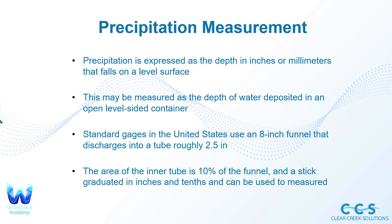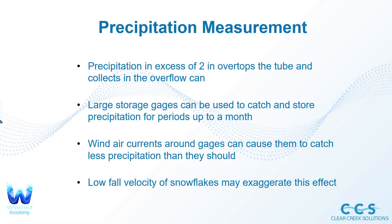Precipitation is expressed as the depth in inches or millimeters that falls on a level surface. This may be measured as the depth of water deposited in an open level-sided container. Standard gauges in the United States use an 8-inch funnel that discharges into a tube roughly two and a half inches wide. The area of the inner tube is 10% of that of the funnel, and a stick graduated in inches and tenths can be used to measure precipitation.